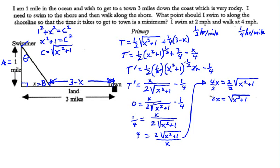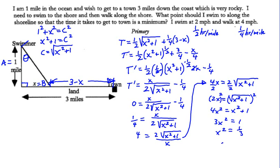Now we're going to square both sides of this equation. On the left side we have 4x squared, and on the right side we have x squared plus 1. Subtracting x squared from both sides, we have 3x squared equals 1. Dividing by 3, x squared equals 1 third. Taking the square root of both sides, x equals plus or minus — but since we're dealing with distance, we take the positive value. So x equals 1 over the square root of 3 miles.